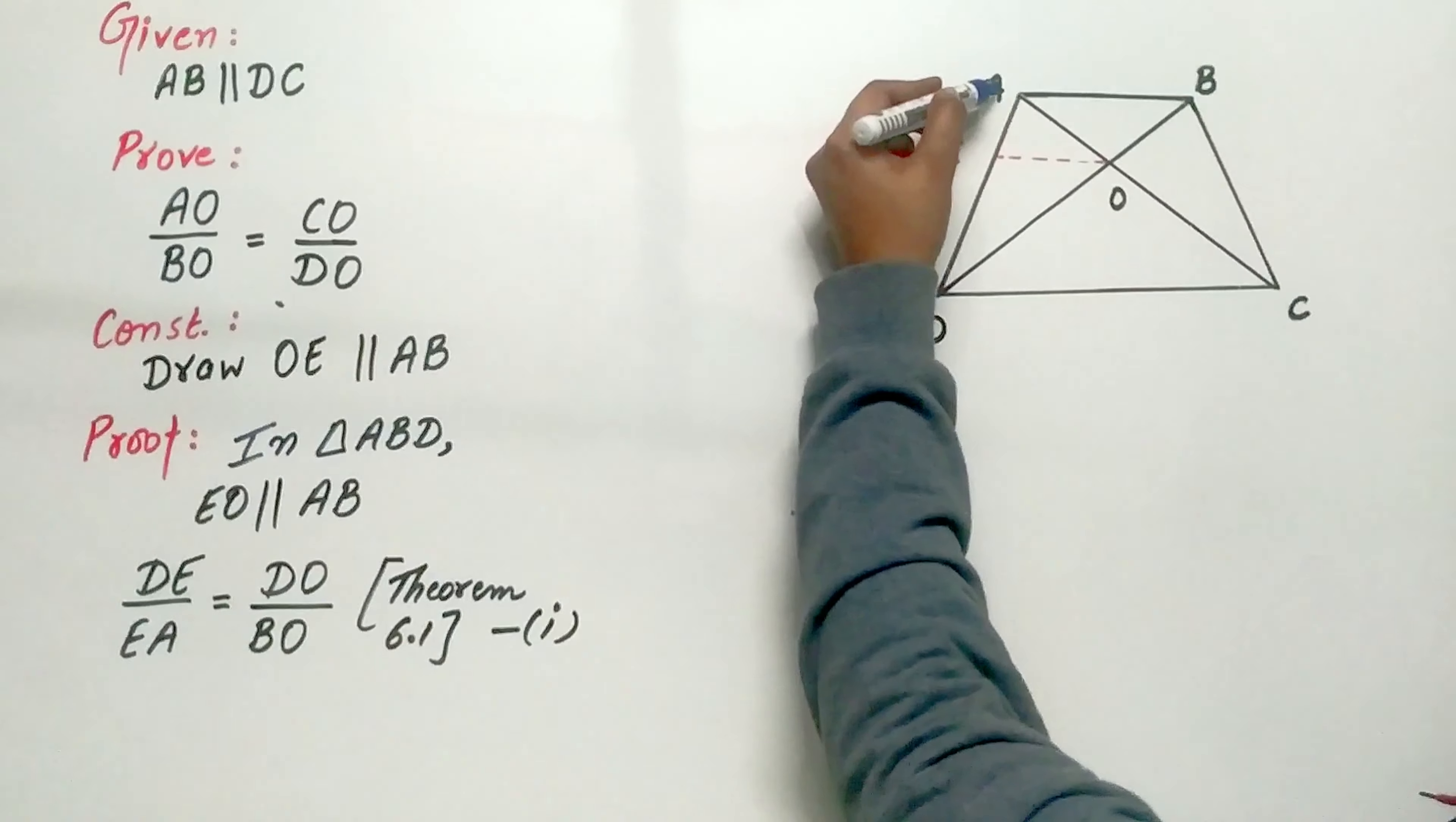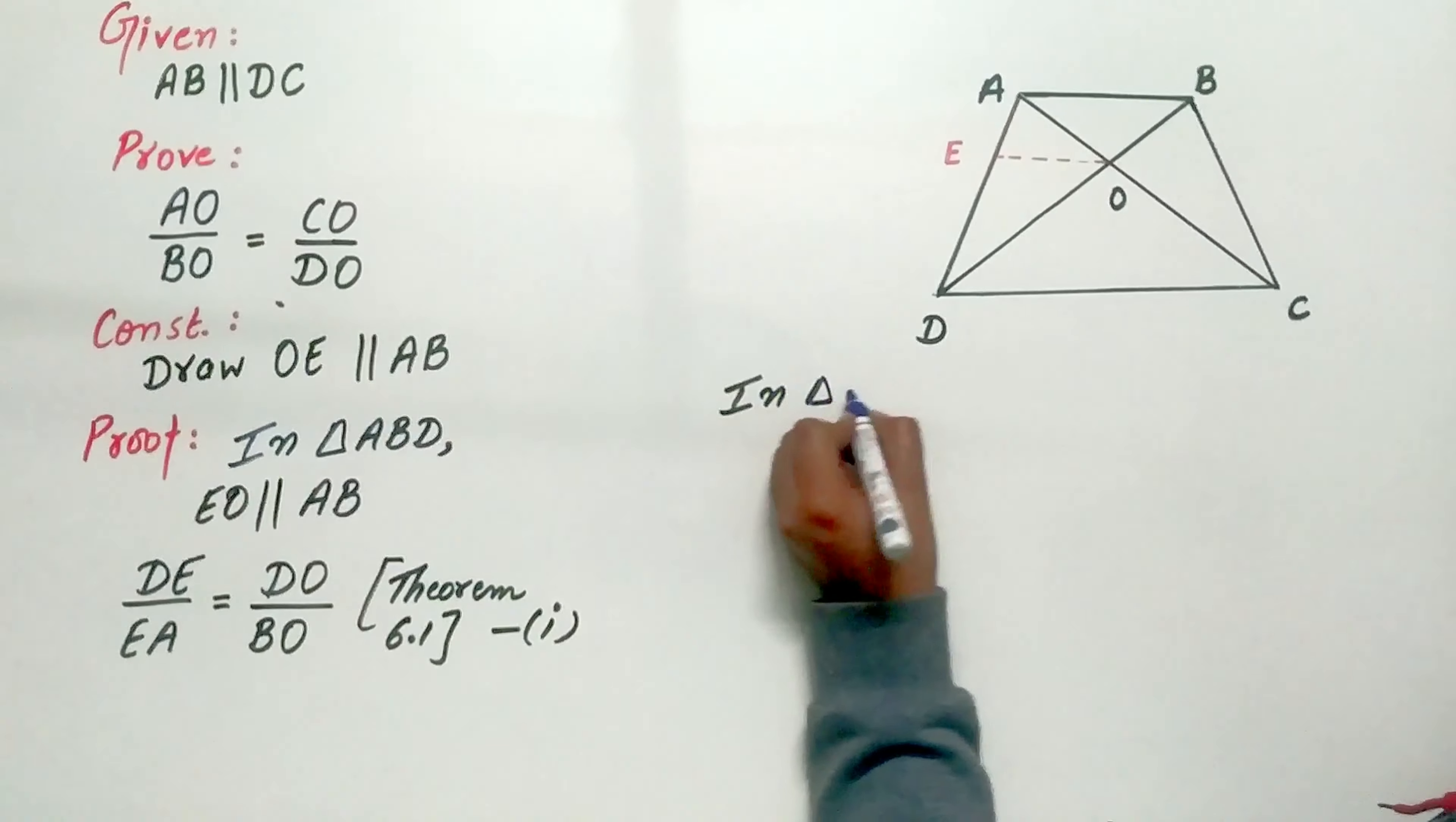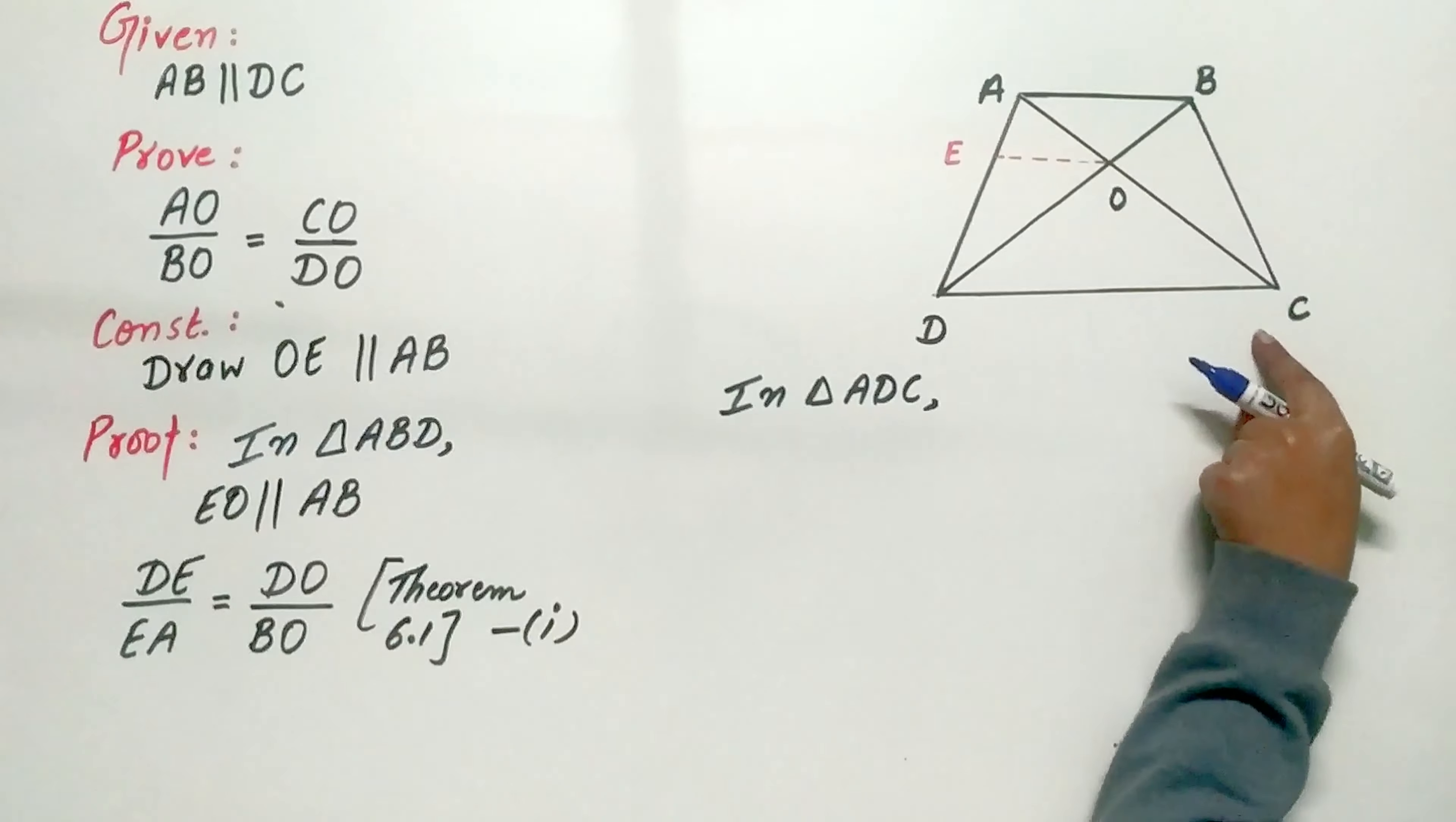Now, in triangle ACD, EO is parallel to DC.